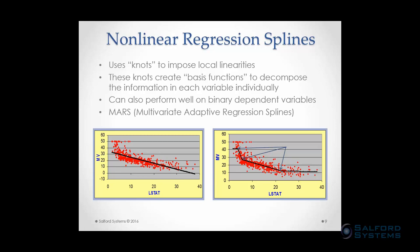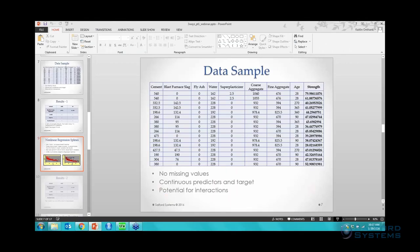In a way, MARS is similar in nature to setting up a bunch of different OLS models within your data space. MARS can also perform well with binary dependent variables — a yes/no or 0/1 target. I can't go into exact detail on the full process in 45 minutes, but more detail will be covered next week, and resources are available on our website. I'll now switch to the software to run a nonlinear regression spline on the concrete data.